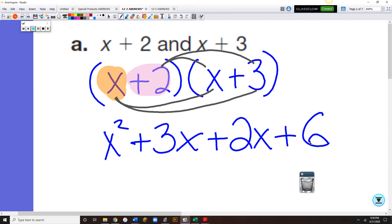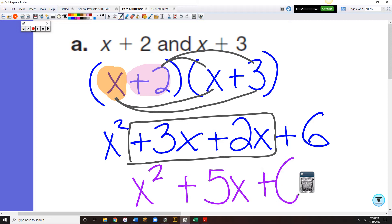All right, so now we've double distributed. What's left is combining like terms. So in the middle, we've got a plus 3x and a plus 2x. And when we combine our like terms, we will get x squared plus 5x plus 6.